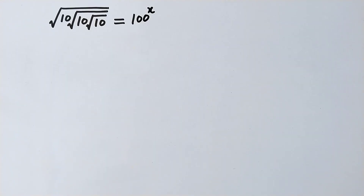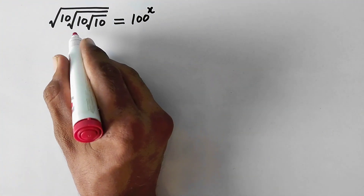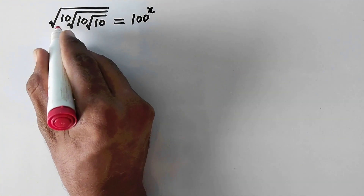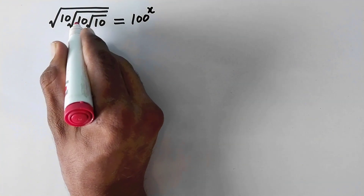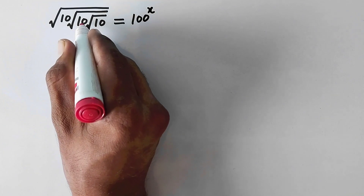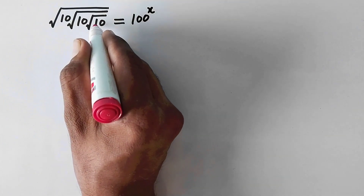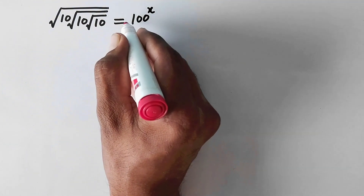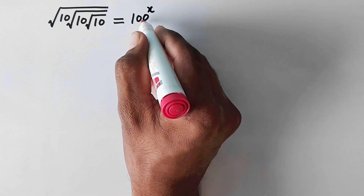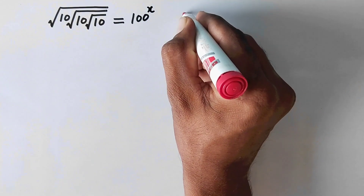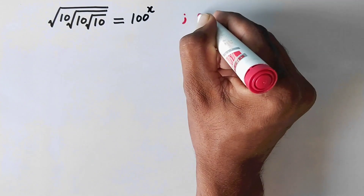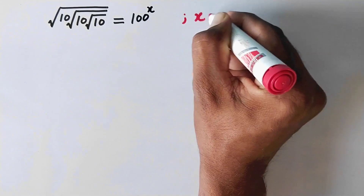Hello everyone. Welcome to Explored Maths. Today we are going to solve the problem: square root 10 times square root 10 times square root 10 is equal to 100 raised to power x. And we have to find the value of x.